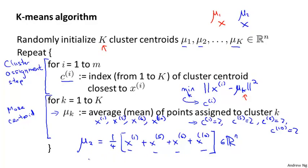One thing sometimes asked is: what if there's a cluster centroid with no points assigned to it? In that case, the more common thing to do is to just eliminate that cluster centroid, and you end up with k-1 clusters instead of k clusters. Sometimes if you really need k clusters, you can randomly reinitialize that cluster centroid. But it's more common to just eliminate a cluster if during k-means it ends up with no points assigned to that centroid — and in practice this doesn't happen very often.